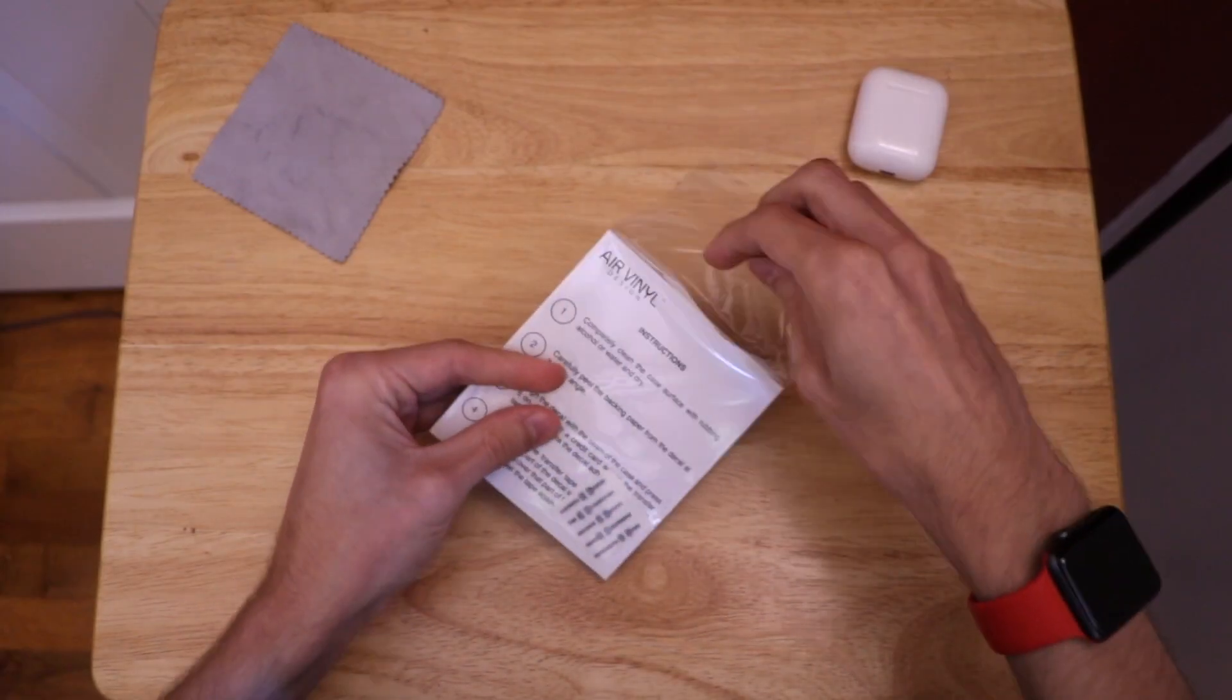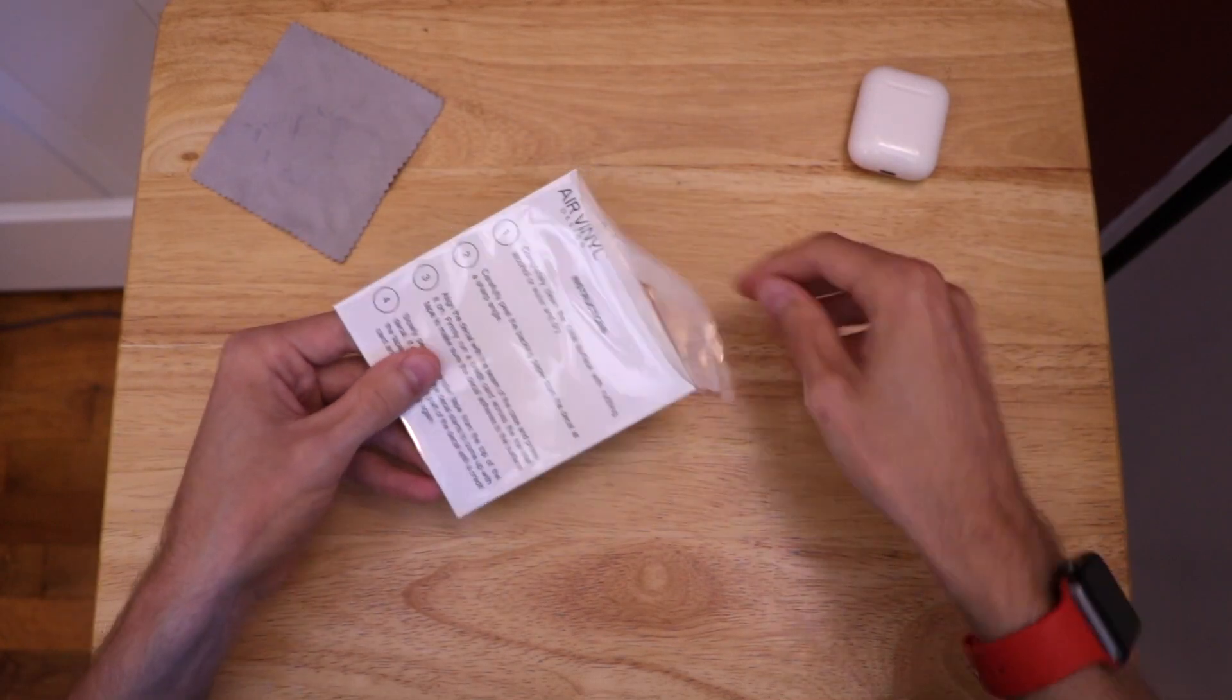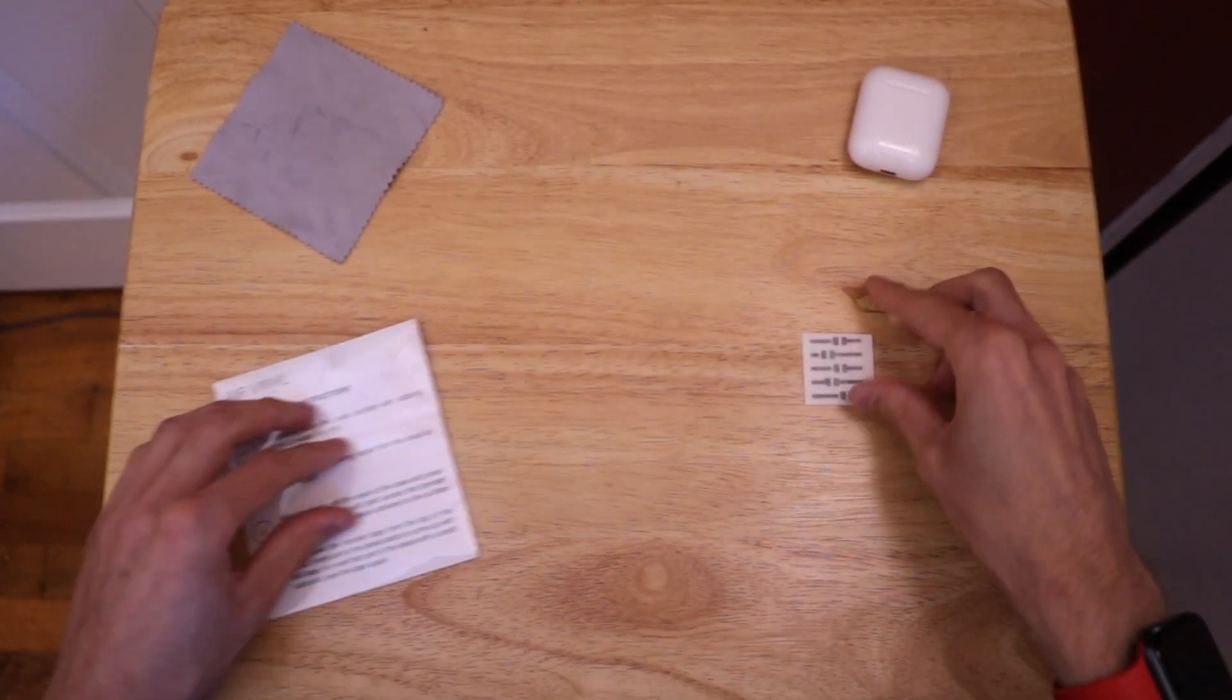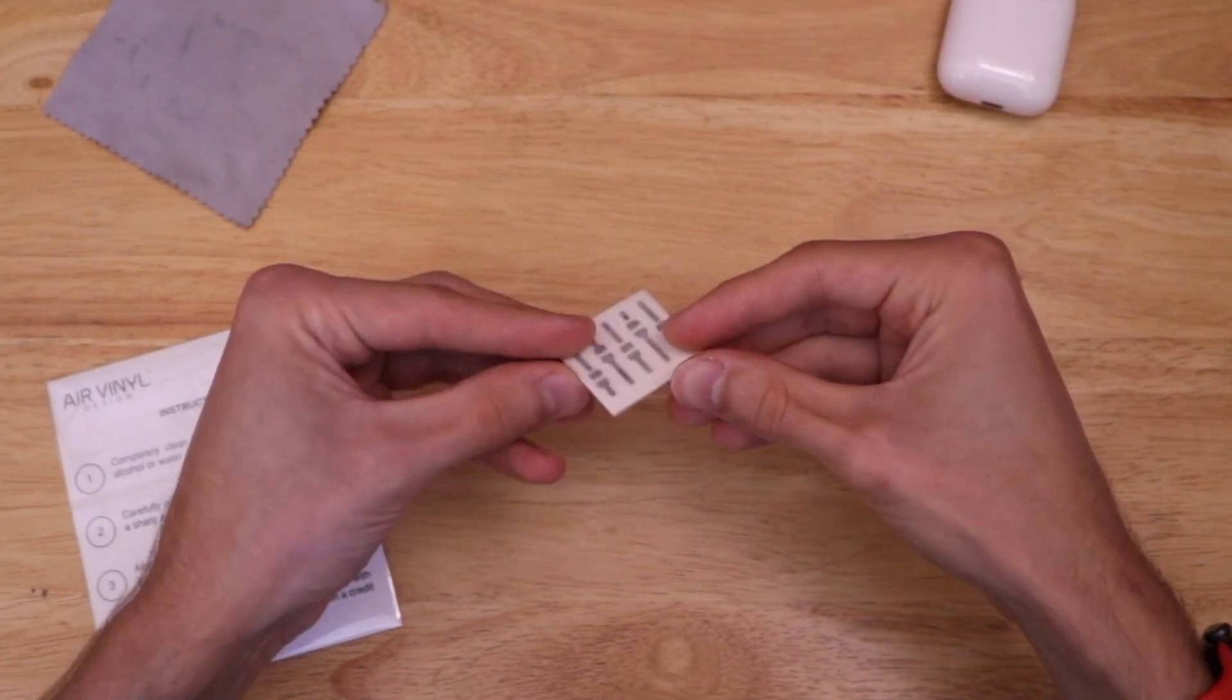And inside of this plastic envelope are the stickers themselves. You get three when you order, they come in a pack of three, but I already used two of them so I only have one left here. Once you get that out you can see the stickers are nicely embossed on the paper for installation.